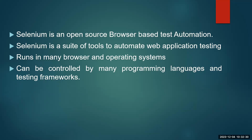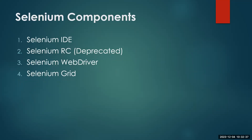How many components are available in the market? There are three active components available for Selenium, but originally Selenium comprised four components: Selenium IDE, Selenium RC (which is deprecated now), Selenium WebDriver, and the last component, Selenium Grid. So there are three different active components available: IDE, WebDriver, and Grid.